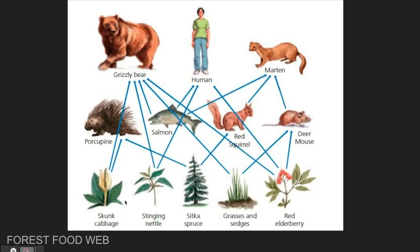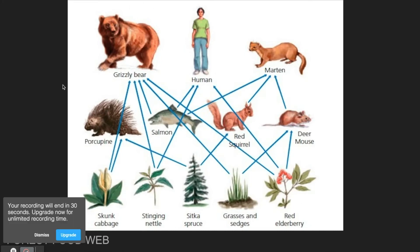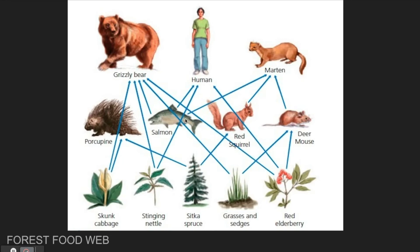Let's look at a food web that was also on our test. On our food web, we have our producers, which are the skunk cabbage, the stinging nettle, the Sitka spruce, grasses, and the red elderberry. These plants are all examples of producers because they make their own food. But we also have some consumers: a porcupine, a salmon, red squirrel, a deer mouse, a marten, a grizzly bear, and a human. These organisms are all examples of consumers.